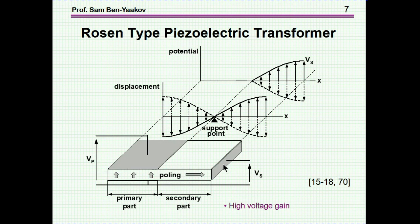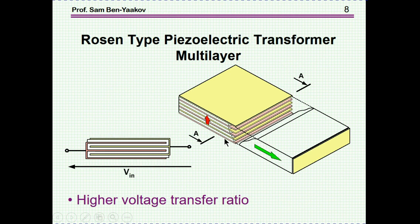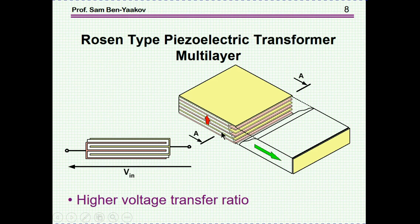You can actually improve or increase the gain factor by sandwiching a number of layers of piezoelectric on the primary — this is like increasing the number of turns in a transformer. So this is a Rosen-type transformer with a multi-layer primary, and as a result we get a very high gain.